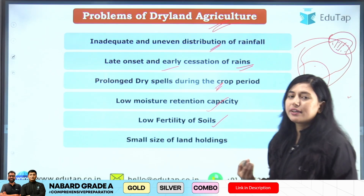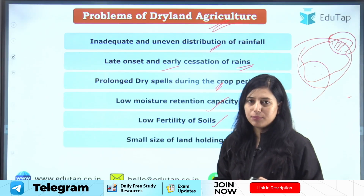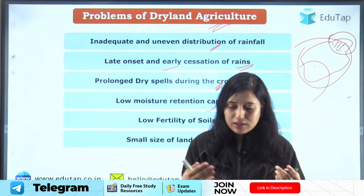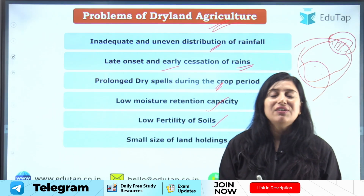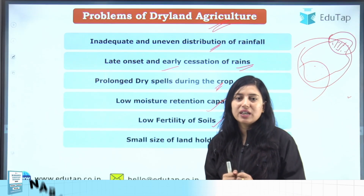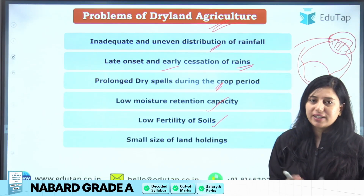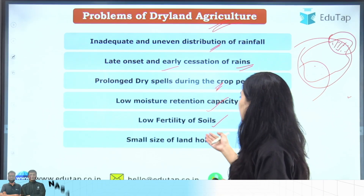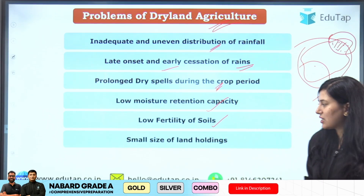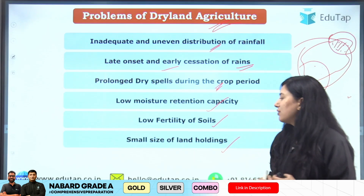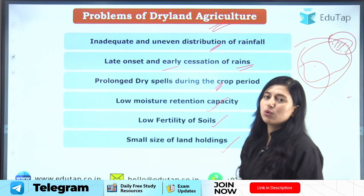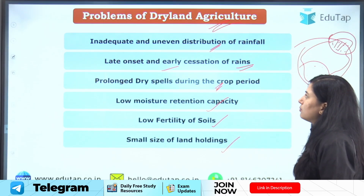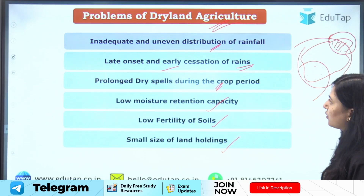Next is low fertility of soil — a related problem. If soils are of poor quality, they will not have good ability to hold nutrients, meaning crops do not receive enough nutrients for growth. Additionally, farmers in such areas have small sizes of land holdings, which also creates a problem. These are the main problems of dryland agriculture.